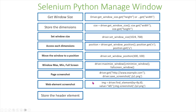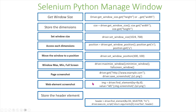And finally, you can also store the header element. First you have to define the header element by its CSS selector, and then you can execute some JavaScript to retrieve that header element. So I'll be showing you how to do all of this in your own Selenium Python project.